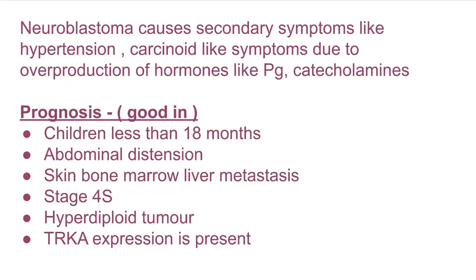Neuroblastoma causes secondary symptoms like hypertension and carcinoid-like symptoms due to overproduction of hormones like prostaglandins and catecholamines. Prognosis will be good in children less than 18 months. If children presenting with neuroblastoma are very young, the prognosis will be good — they will recover sooner and minimal treatment is required. Abdominal distension and metastasis to skin, bone marrow, or liver is seen in stage 4S type of neuroblastoma.